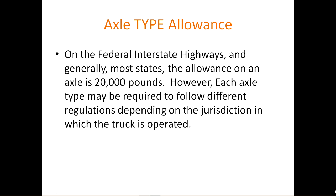Axle type allowance. On the Federal Interstate Highways, and generally most states, the allowance on an axle is 20,000 pounds. However, each axle type may be required to follow different regulations depending on the jurisdiction in which a truck is operated.